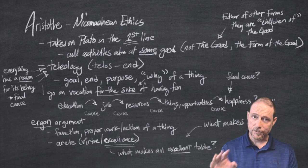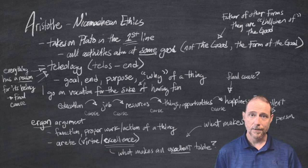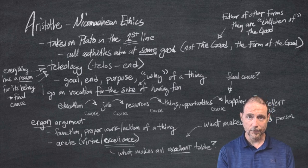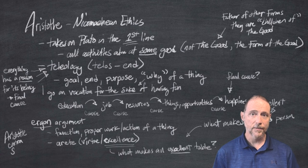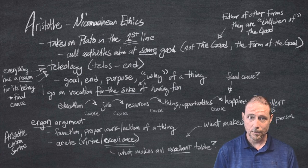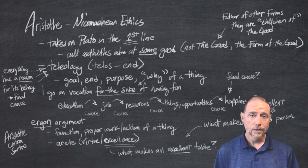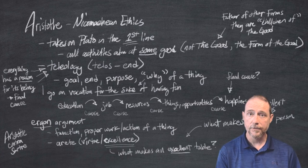If we flash forward a couple thousand years and then some, this is precisely the point that Sartre moves against. Jean-Paul Sartre is the philosopher in the 20th century who would say that existence precedes essence. That the essence of what that thing is can be defined afterwards. So that human beings are a kind of blank slate and we can define the meaning in our lives afterwards. But this is precisely the opposite of Aristotle.